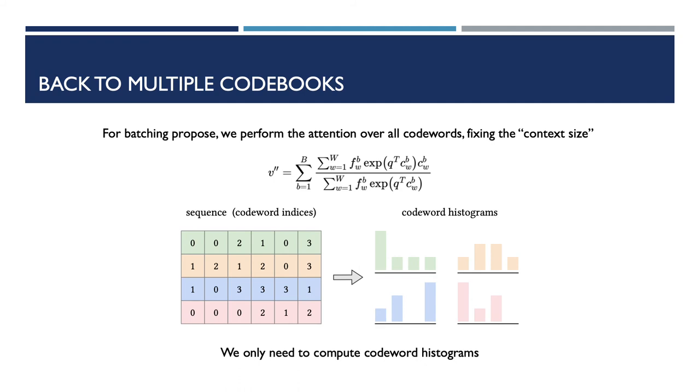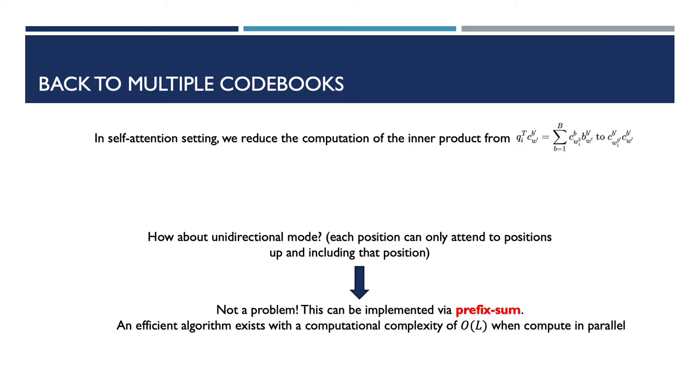However, we know that there is another problem immersed. That is, the cardinality of the set of unique code words used in different sequences are different. So for batching purposes, we have to perform the attention over all code words, hence fix the context size. We only need to compute a code word histogram of each input sequences. For a code word that is not used by any item in the sequences, its occurrence count would be zero. So this code word will not contribute to the weighted average.